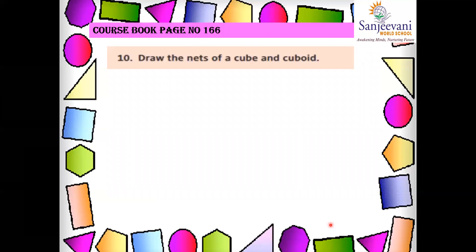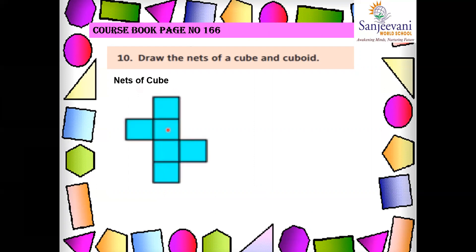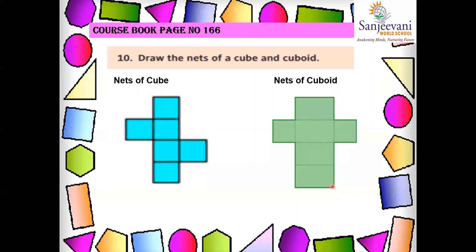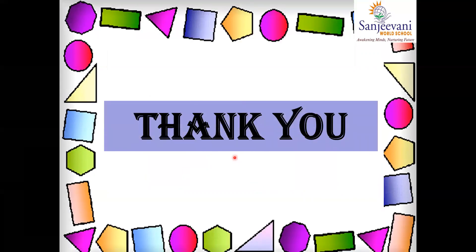Draw the nets of the cube and the cuboid. Nets mean when you open a 3D shape, you get to see the net of each shape. This is the net of a cube and this is the net of a cuboid. Please do this in your notebook. So we have completed in this video the course book checkpoint part of our geometry chapter. Thank you, children.